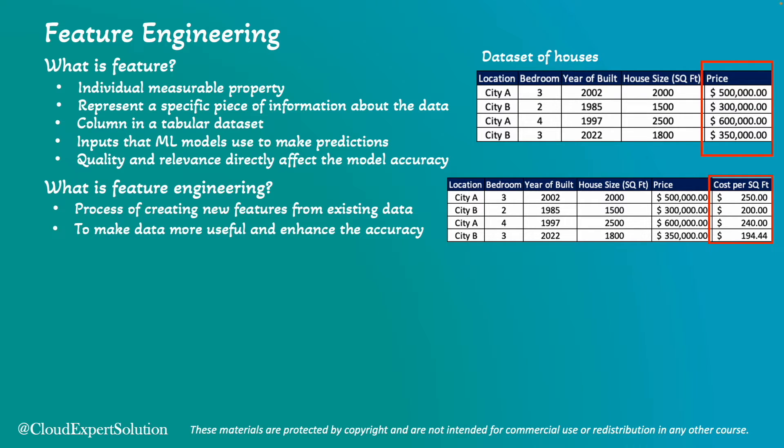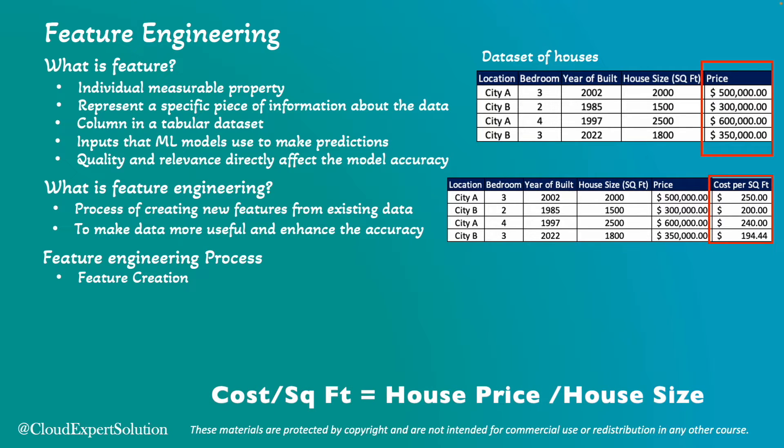There are different feature engineering techniques available. The process of introducing a new feature from existing dataset is called feature creation. And the example we took where we created the new feature called price per square feet is the perfect example of feature creation technique. In this example, the raw data was house size and price. We divided house price with house size to create the new feature. The main intention was to relate the house price with house size for all different types of residential properties.